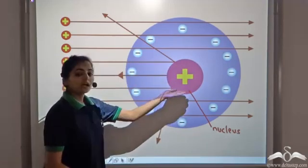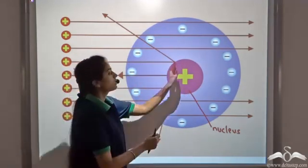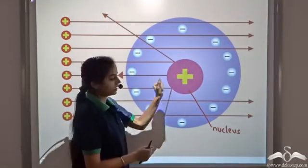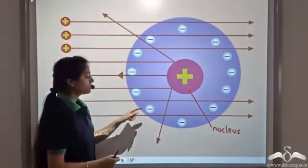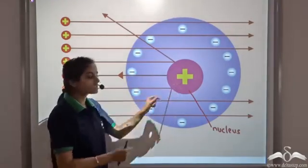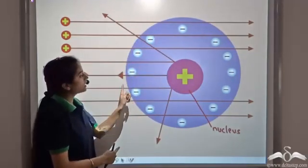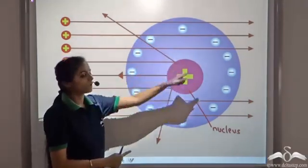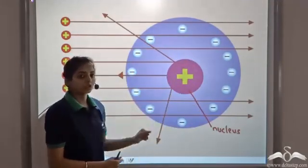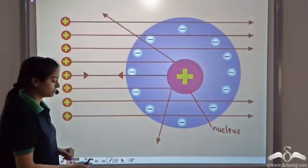The entire mass and the positive charge — that is, all the protons of the atom — are concentrated in this central part. Since electrons have negligible mass compared to protons, they do not deflect the alpha particles and revolve around the nucleus in the empty space. This is how Rutherford proposed the structure of the atom.